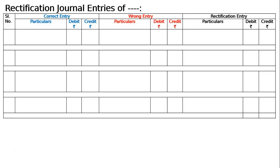The question is: rectify the following errors by passing journal entries. A sum of 470 received from Ganga was posted to her debit as 740. The correct entry is cash account debited to Ganga 470, but by mistake it was passed as cash account debited and Ganga debited 470, with Ganga showing 740.